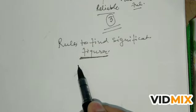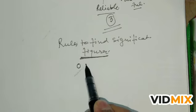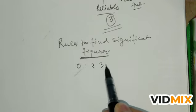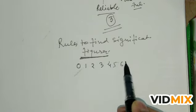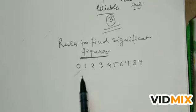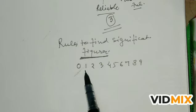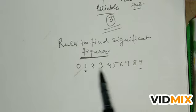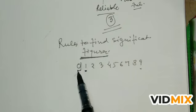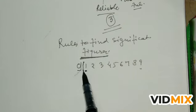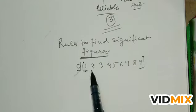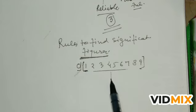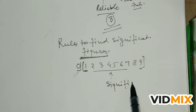All the numbers — 0, 1, 2, 3, 4, 5, 6, 7, 8, and 9 — you know them very well. So all non-zero digits: 1, 2, 3, 4, 5, 6, 7, 8, 9 — all of these numbers are significant. They are all significant.